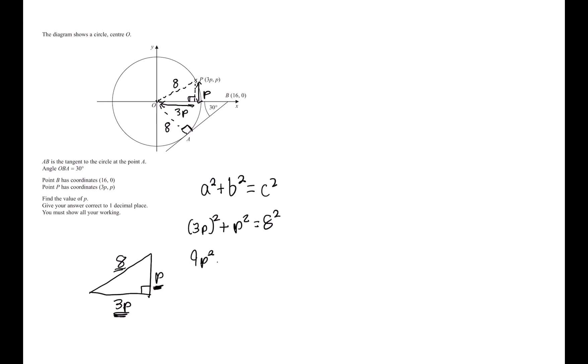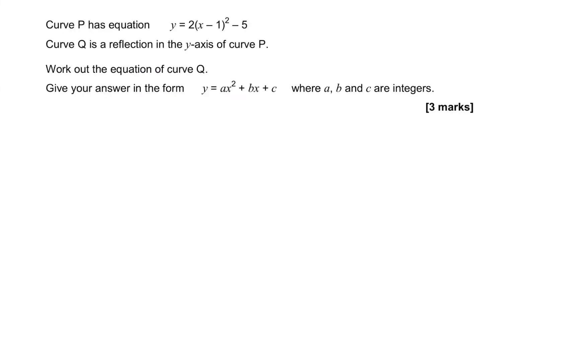Simplifying this, we're going to get 9P squared plus P squared equals 64. We get 10P squared equals 64. If we divide both sides by 10, we get P squared equals 6.4. Now to get P on its own, we just take the square root of both sides, giving us P equals square root of 6.4. The question asks us to give it as a decimal to one decimal place, so we put that in our calculator, giving us 2.5 as P.